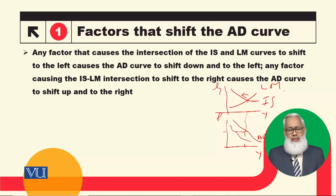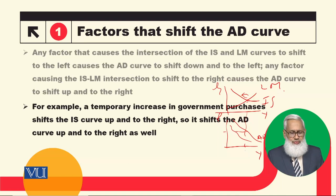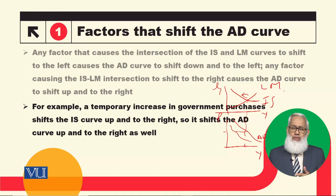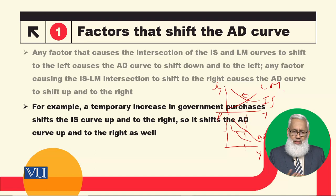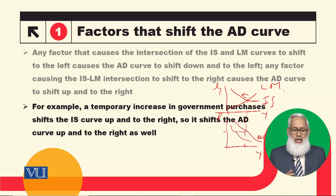अगर IS curve shift होता है या LM curve shift होता है, तो उससे यह intersection point भी change हो जाएगा. IS curve shift होने की बेशुमार वजुहात हम discuss कर चुके हैं. IS curve किसको represent करता है — goods market को, goods market की demand और उसकी supply की equality को. Demand के तीन components होते हैं: consumption, investment, government spending. अगर government spending increase हो जाती है, तो total demand बढ़ जाएगी, so IS curve will shift upward.